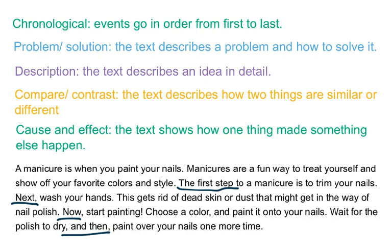I realize that the text is teaching me how to give myself a manicure. It gives me a list of steps in order from first to last. Because of this, I know that it's a chronological text.